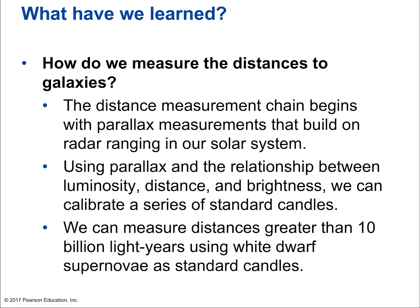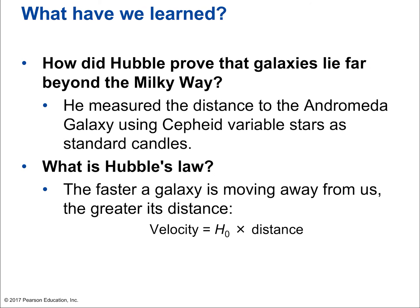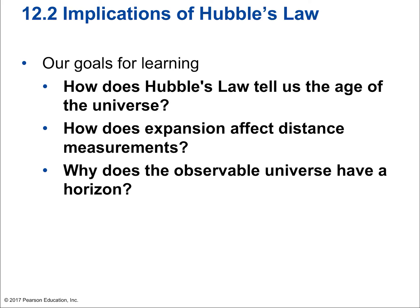In summary, the distance measurement chain begins with parallax built on radar ranging in our solar system. Using parallax and the luminosity-distance-brightness relationship, we calibrate standard candles: Cepheid variables and white dwarf supernovas. Hubble proved galaxies lie beyond the Milky Way by measuring Andromeda using Cepheid variables, and derived Hubble's law — the faster a galaxy is moving away, the greater its distance. This raises big questions: how does Hubble's law tell us the age of the universe? How does expansion affect distance measurements? And why does the observable universe have a horizon?